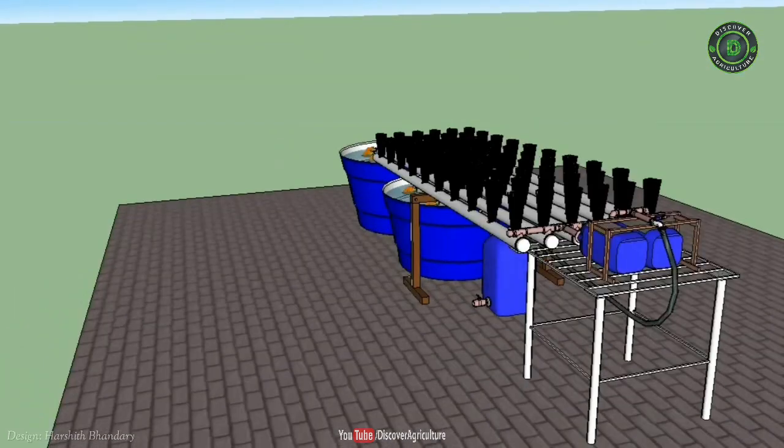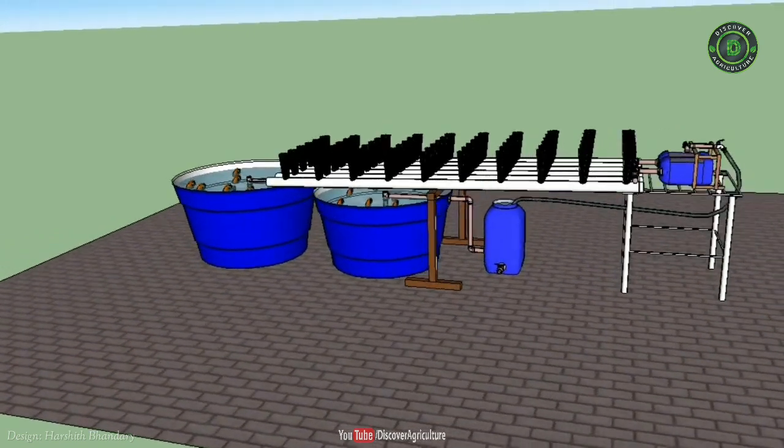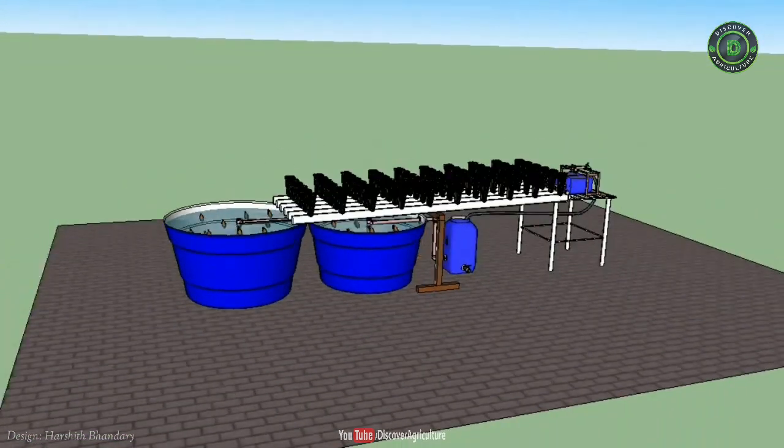Vegetables aren't the only choice of crop, however. Fruits such as strawberries, watermelon, and cantaloupe can be used and grow well with fish.